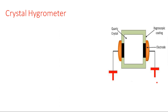The second type of hygrometer is the crystal hygrometer, which is also a type of capacitor hygrometer. A quartz crystal is placed between two electrodes, surrounded by a hygroscopic coating.